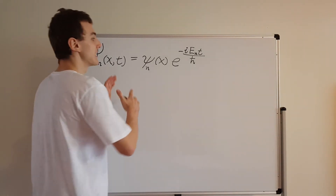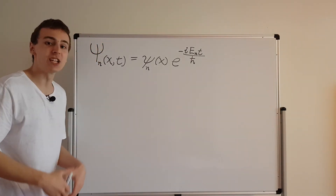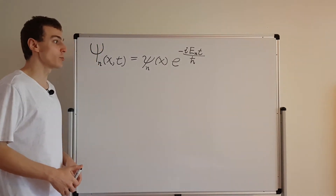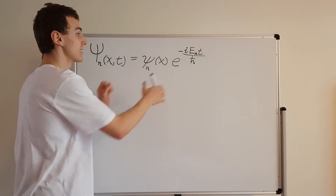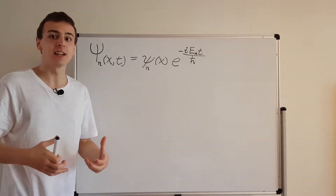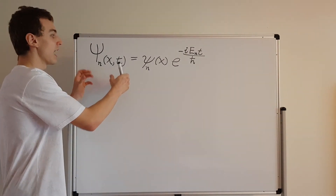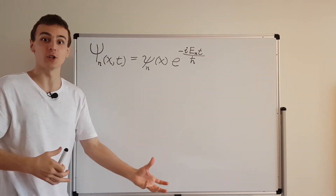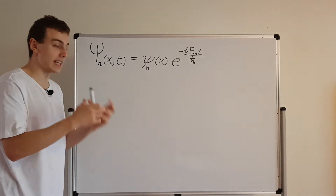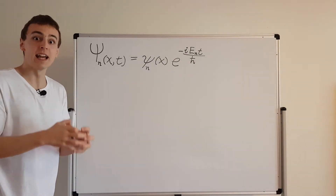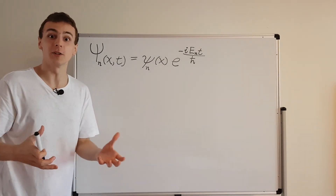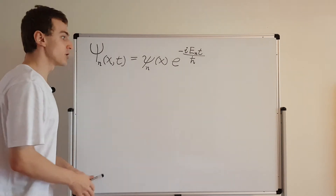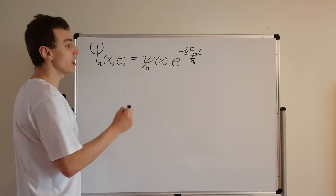Let's go ahead and stitch these together to make a general solution to the Schrödinger equation. What we're going to do is take a linear combination of these solutions. A linear combination means you take functions, scale them by some constants, and then add them. You take the sum of scaled functions, and these scalar constants out the front can actually be complex values — they don't just have to be real numbers, they can have imaginary components as well.